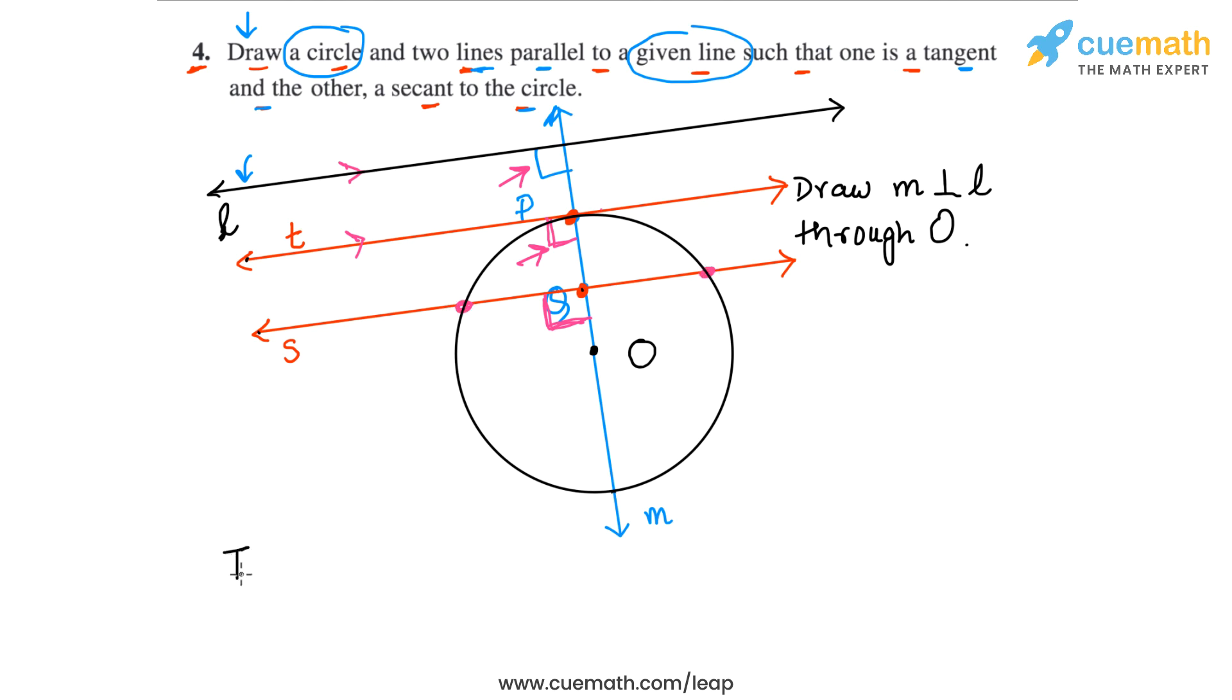Let me write these steps here. To draw the tangent T we basically draw the line T perpendicular to M at the point of intersection P, the point of intersection of the line M with the circle. And to draw the secant, we basically took a point Q on the line M inside the circle and then we draw a line S perpendicular to M at that point Q. So that gives us a secant. This is how you can construct the tangent and the secant required.